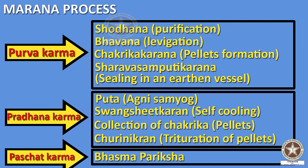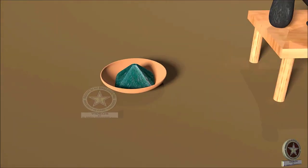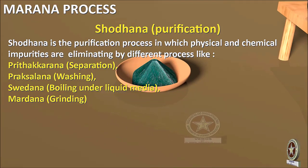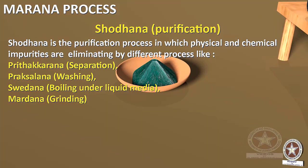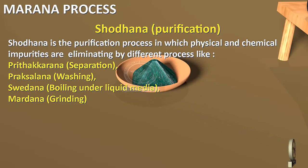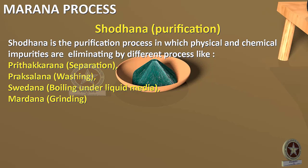Now let us learn the details of the procedure of Marana. First comes Shodhana — the purification process by which physical and chemical impurities present in the raw drugs are eliminated by different procedures like Prithakkarana (separation), Prakshalana (washing), Swedhana (boiling in liquid media), grinding, and so on. The detailed explanation of Shodhana has been covered in the previous video.